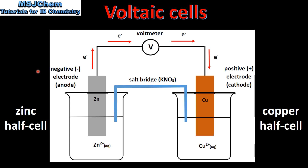A Voltaic Cell is made up of two half cells. On the left we have a Zinc half cell, and on the right we have a Copper half cell. A half cell is composed of a metal electrode in a solution of its ions. For example, we have a Zinc electrode in a solution of Zinc 2+ ions, and in the Copper half cell we have a Copper electrode in a solution of Copper 2+ ions. The two half cells are connected by a wire and a salt bridge.